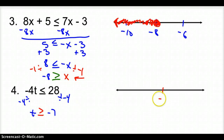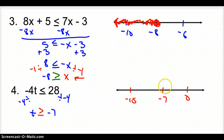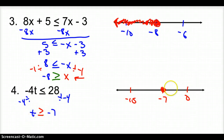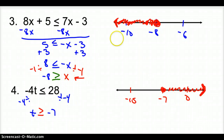To graph this, put negative 7 in the middle, 0 on the right since it's greater, and negative 10 on the left. It's a closed circle because of the equal to bar. Since the variable is on the left, I can follow the arrow and shade to the right. When the variable is on the right, I shade opposite.